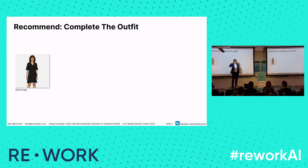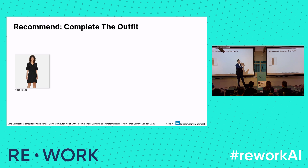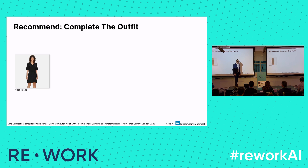We replicated that paper but found there were limitations, so we added rules on top. For example, we added an estimation of the gender of the garment so you don't mix genders. We also looked at how color plays a role in outfits — extracting color and trying not to add colors that would clash.